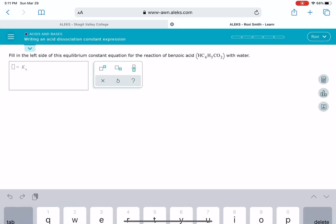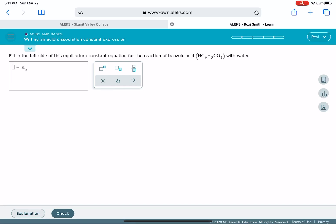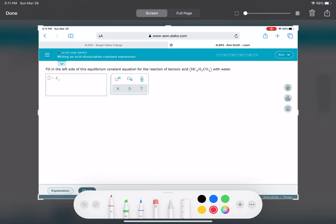This is a fancy way of saying writing the equilibrium expression for this acid. And so what this problem is wanting you to do is write the Ka, the equilibrium expression. I'm not exactly sure why it wants it to be on the left side, but that's fine.